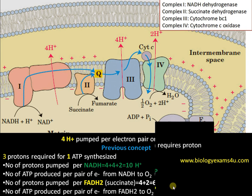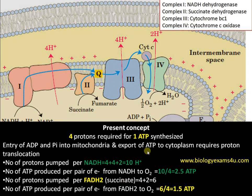This was the previous concept. Now moving into the present concept. According to recent editions of many textbooks, 4 protons are required for 1 ATP synthesis. The reason is that entry of ADP and Pi into mitochondria and export of ATP to the cytoplasm all require proton translocation. Therefore, let us rework the calculation.